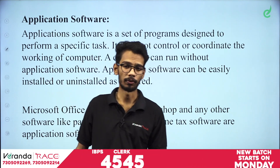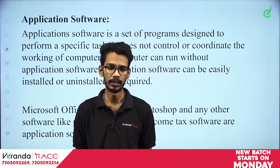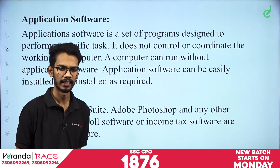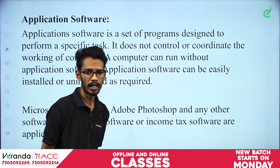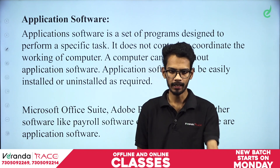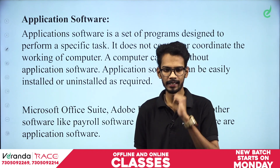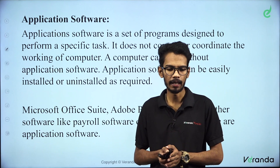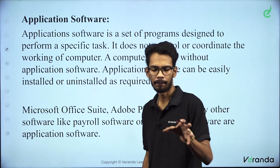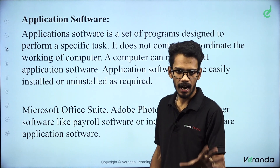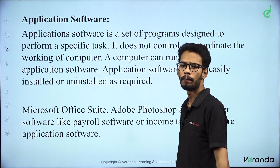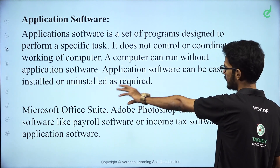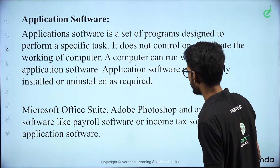Application software is a set of programs designed to perform a specific task. One good task is what application software does. For example, Photoshop is an application software. We can install it and we can uninstall it. Application software can be easily installed or uninstalled as required.